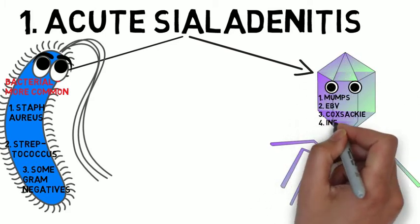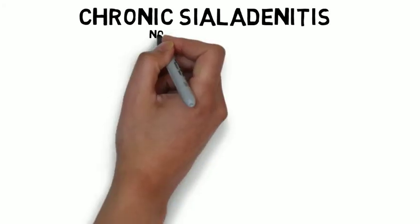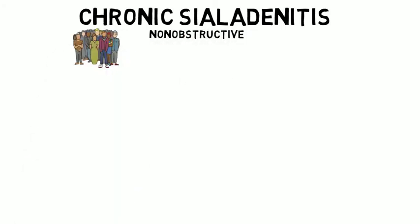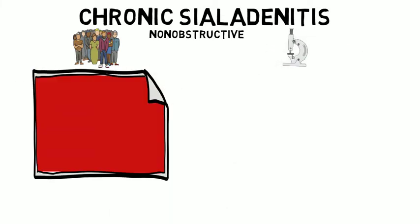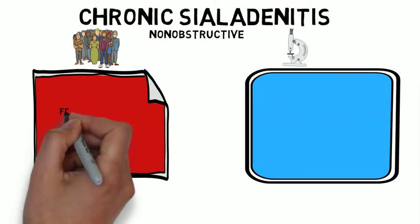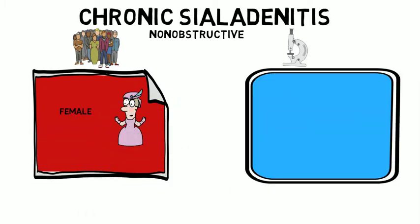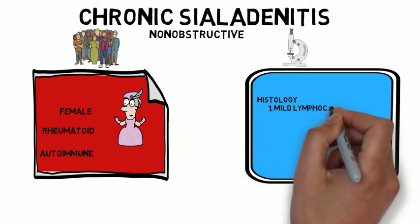After that we have chronic sialadenitis. Setting aside obstructive cases caused by stones, the non-obstructive variety tends to occur in females with rheumatoid arthritis or a history of autoimmune disease. Histologically, we'll see a mild lymphocytic infiltrate, parenchymal atrophy, and fibrosis.